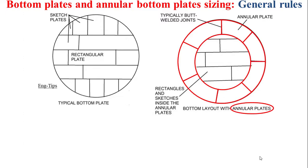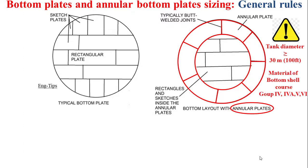The annular bottom plates are depicted here in red. Note that annular bottom plates are needed only when the tank diameter is greater than 30 meters, or when the bottom shell course is designed using the allowable stress for materials in group 4, 5a, 5, and 6.